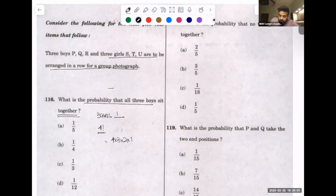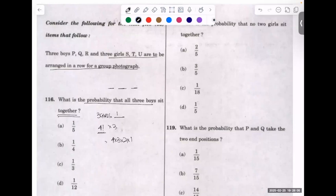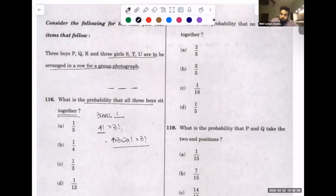Now amongst the boys they can be filled up in three different ways, that is three factorial into three factorial, divided by total number of outcomes.